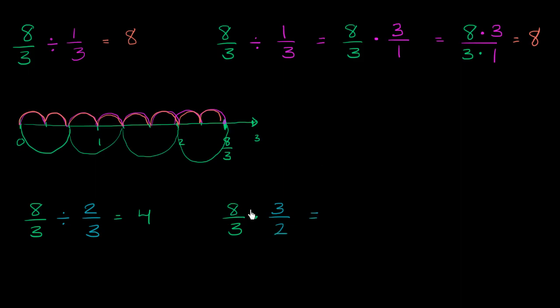In the numerator, once again, we get 8 times 3, which is 24. And in the denominator, we get 3 times 2, which is 6. So now we get 24 divided by 6 is equal to 4.